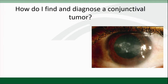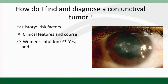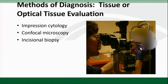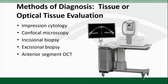So how do I find and diagnose conjunctival tumors? The history — how long has it been there, has it come back — clinical features, and of course I like to joke that I use a lot of women's intuition to figure out if something is malignant or not, and that works pretty well. Now we're going to talk about tissue, histopathological or optical: impression cytology, confocal microscopy, incisional biopsy at the slit lamp, excisional biopsy in the operating room with cryotherapy, and imaging.